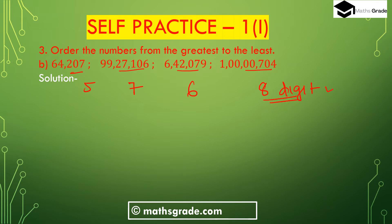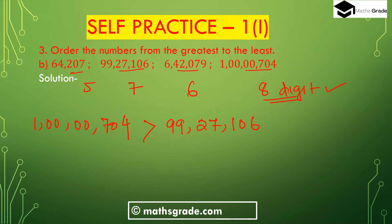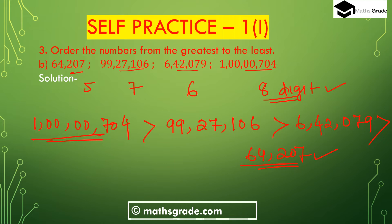An 8-digit number is always the greatest. So 1,704 is the greatest number, then 99,27,106, then 6,42,079, then 64,207 is the smallest. Ordering from greatest to least: 1,704; then 99,27,106; then 6,42,079; then 64,207.